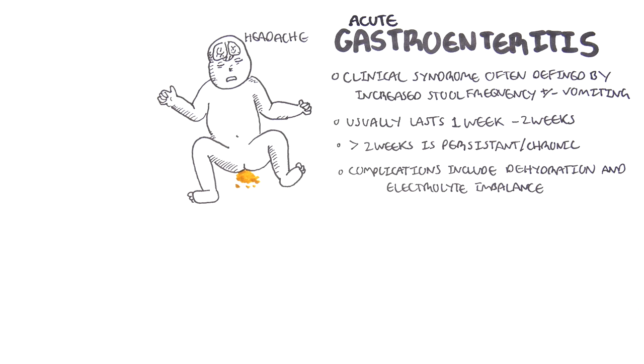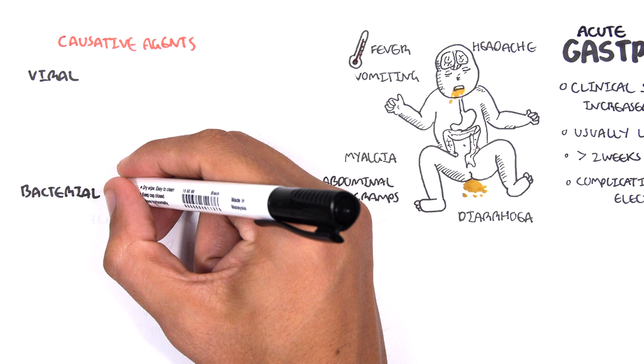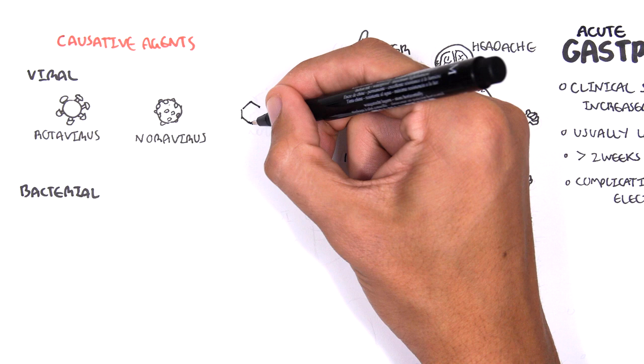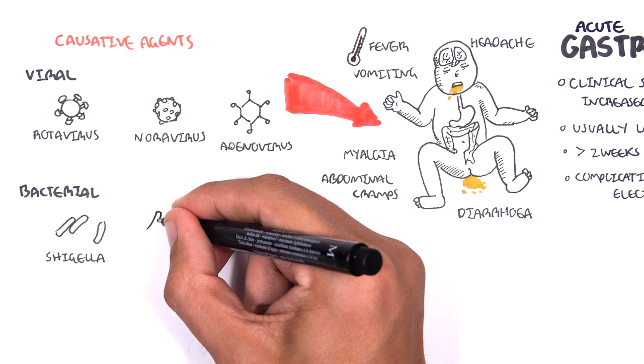The causes of acute gastroenteritis can be viral or bacterial. It is most often viral. The viral causes include rotavirus, norovirus, or adenovirus. Adenovirus, as we mentioned earlier in this video, can cause myocarditis secondary to gastroenteritis. Bacterial gastroenteritis causes include Shigella, Salmonella, and E. coli. Bacterial causes are often more severe.